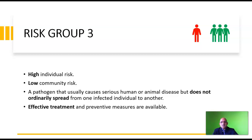Biological agents belonging to risk group 3 pose a high risk to the individual; however, the risk of transmission to the community is low. Risk group 3 pathogens cause serious human or animal disease but do not ordinarily spread from one infected individual to another. Effective treatment and preventive measures are available.